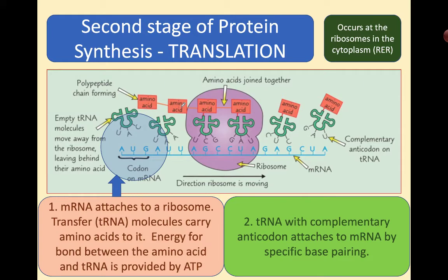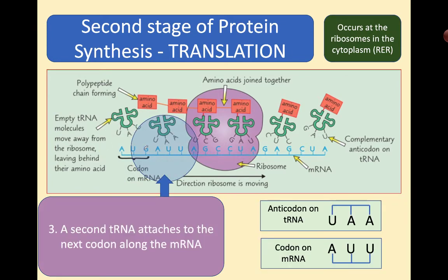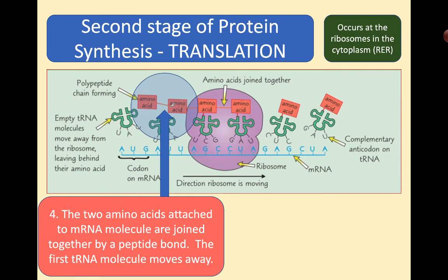How does this happen? We have what's called complementary coding. A transfer RNA with a complementary anticodon attaches to messenger RNA by specific base pairing. You can see here we have codon AUG; the corresponding anticodon would be UAC. Then, after the first amino acid has been released by the transfer RNA, the second transfer RNA attaches to the next codon, AUU, with anticodon UAA, which codes for a particular amino acid. These two amino acids are then joined together by a peptide bond — that orange there is a peptide bond — and having delivered its amino acid, the first transfer RNA molecule moves away to go and collect another amino acid.